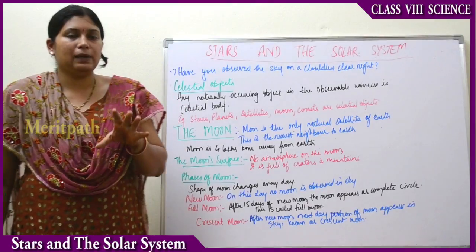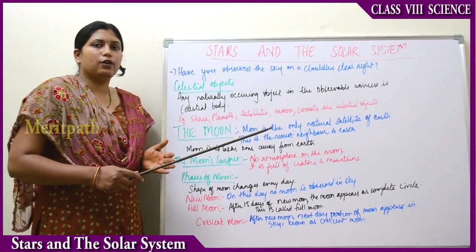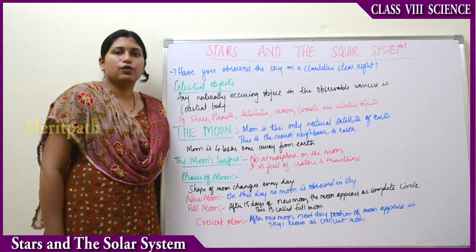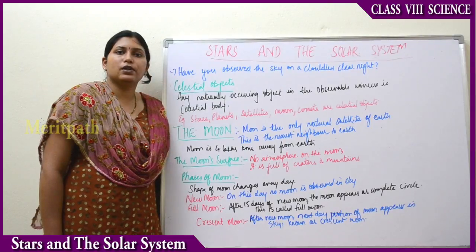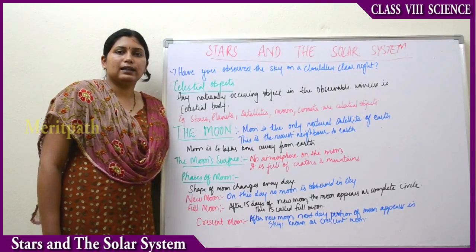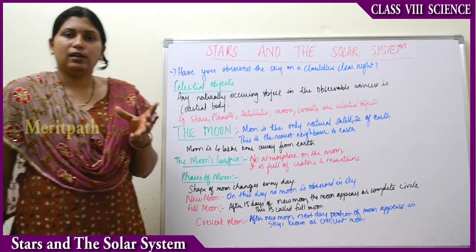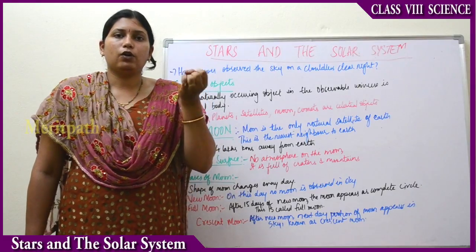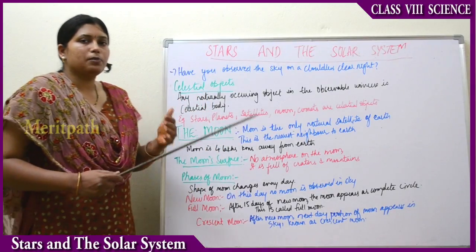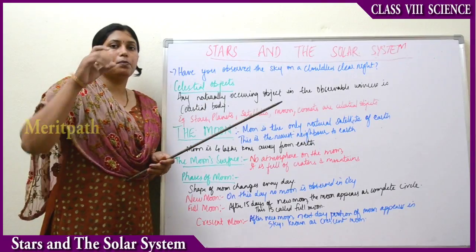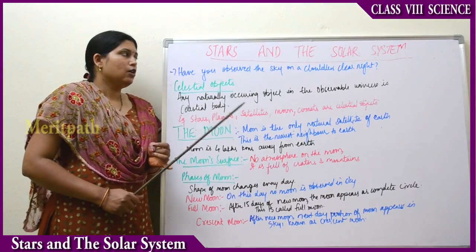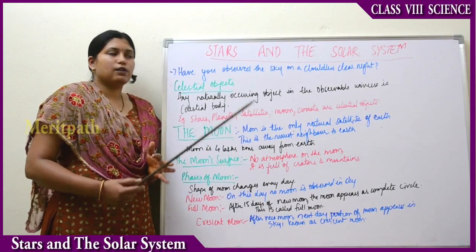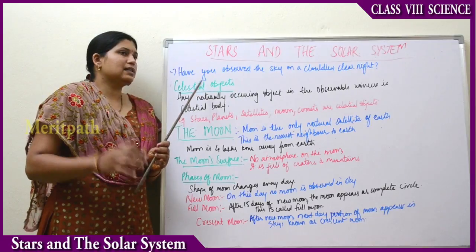Due to smoke and pollution, a layer forms over the atmosphere in cities, so the sky is not completely clear there. If you go to a village on vacation, try to observe the sky at night. There will be objects which are shining and sparkling, some giving only light without twinkling. If you have a telescope, you can see the stars and other things more clearly.